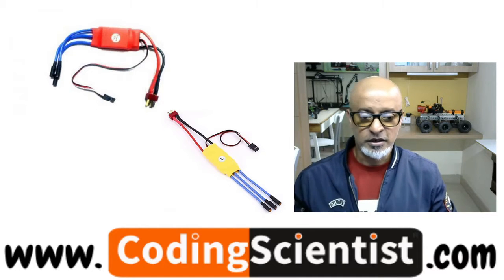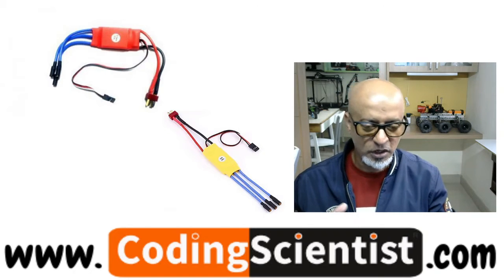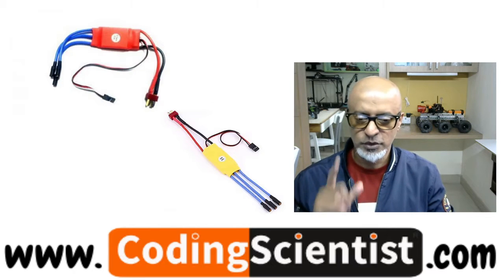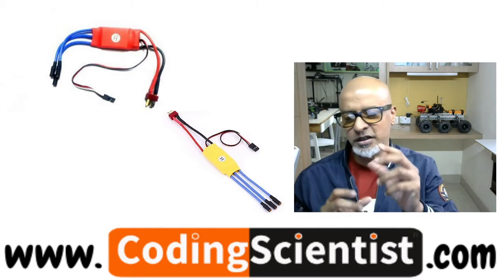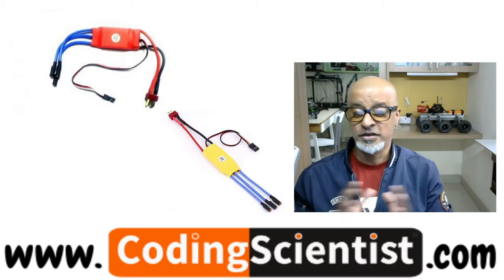There are many types of ESCs in the market. It depends upon the drone you're going to build and the power requirements. The standard ESCs are the ones you can see behind me. The color and shape might differ from manufacturer to manufacturer, but the standard function is it's an electronic circuit with the purpose to vary or increase the speed of the motors.